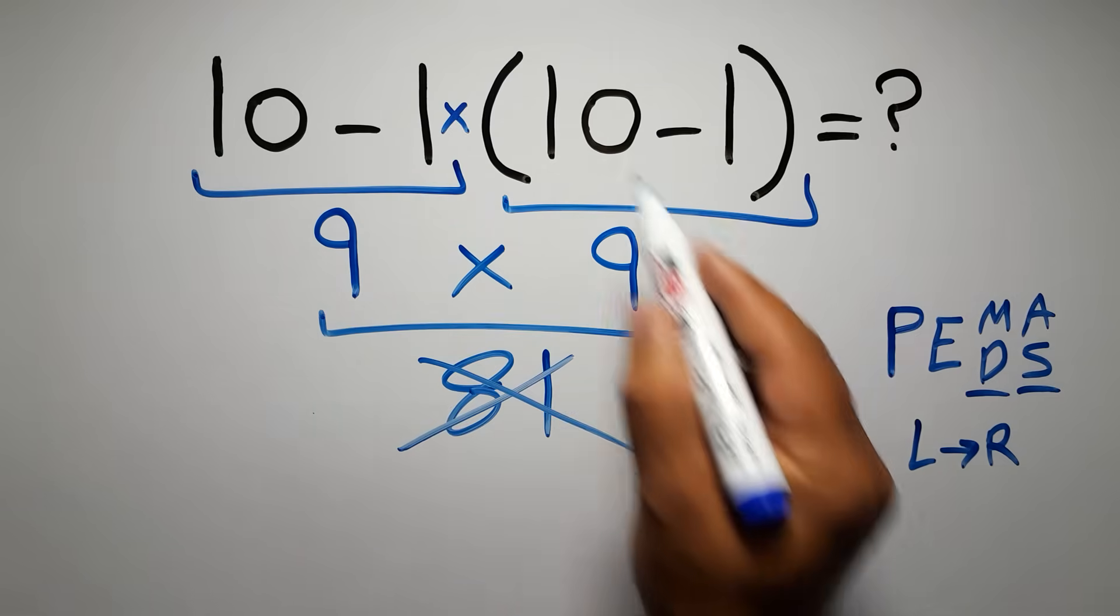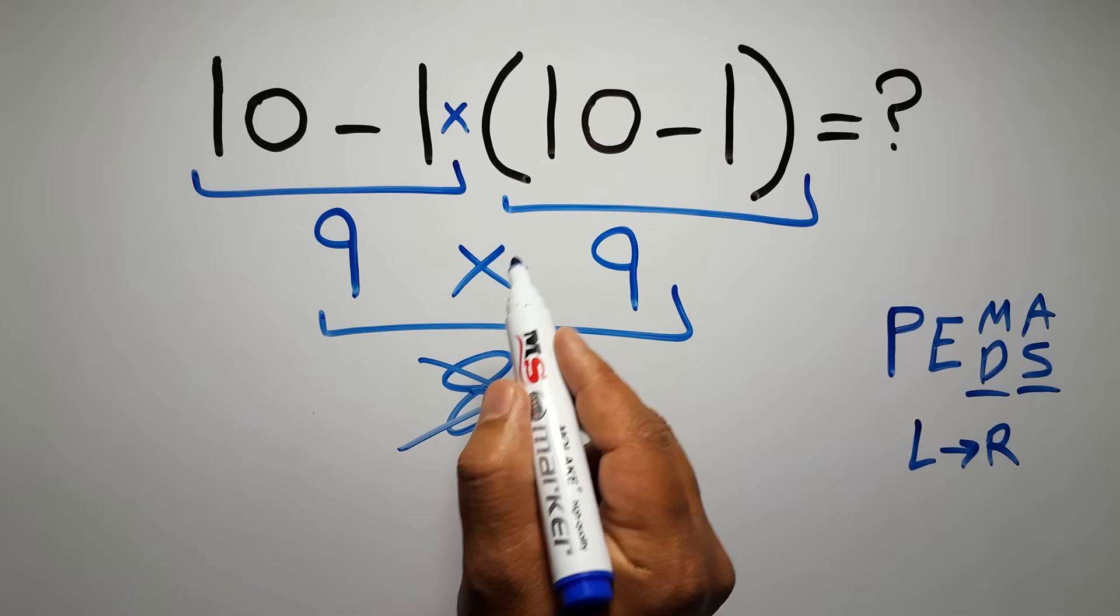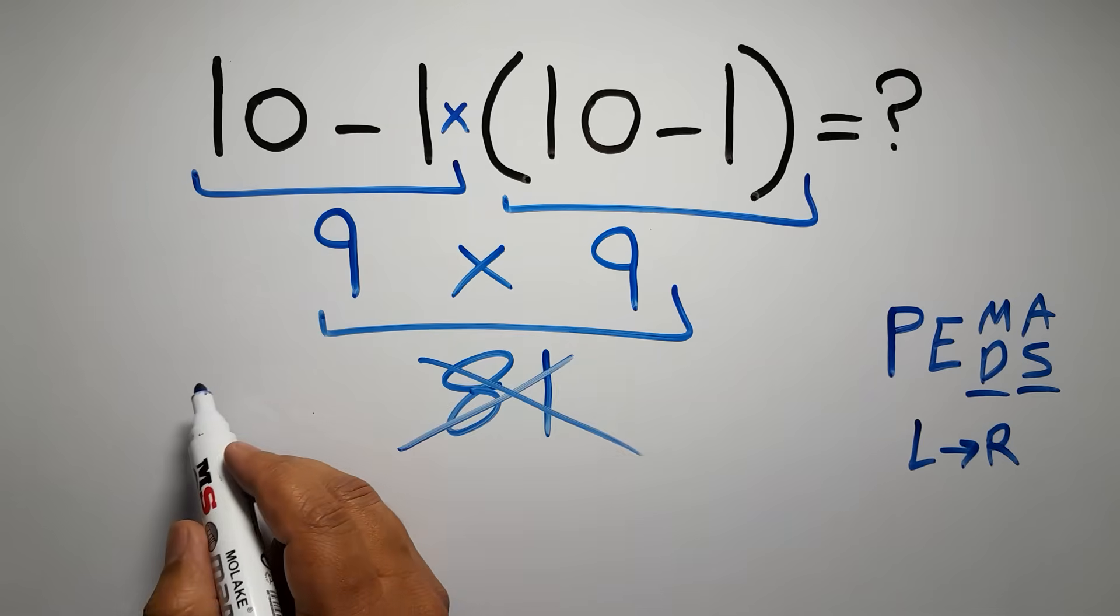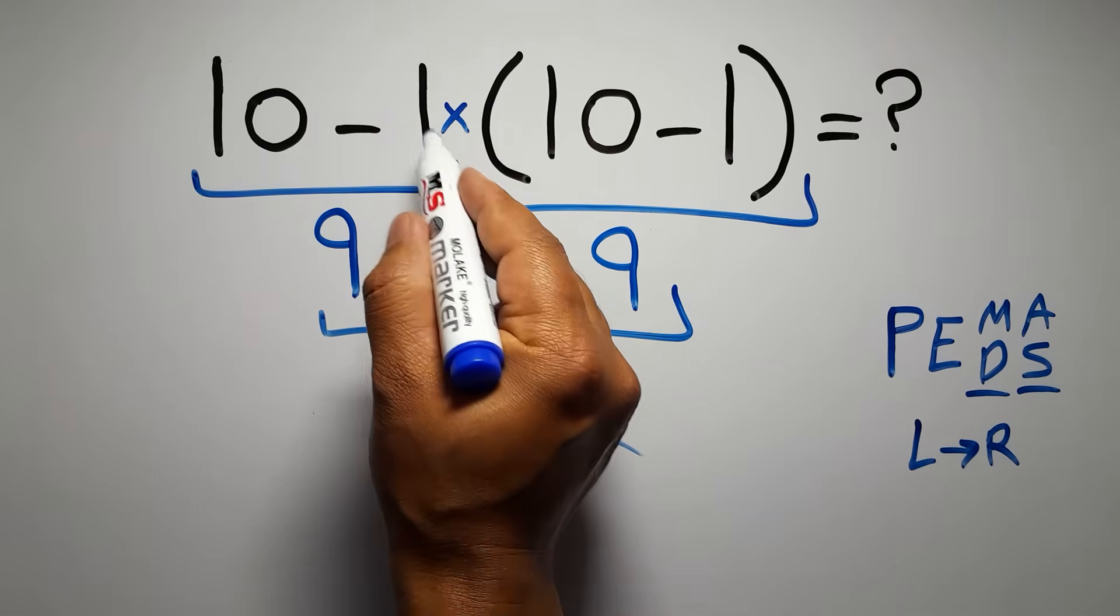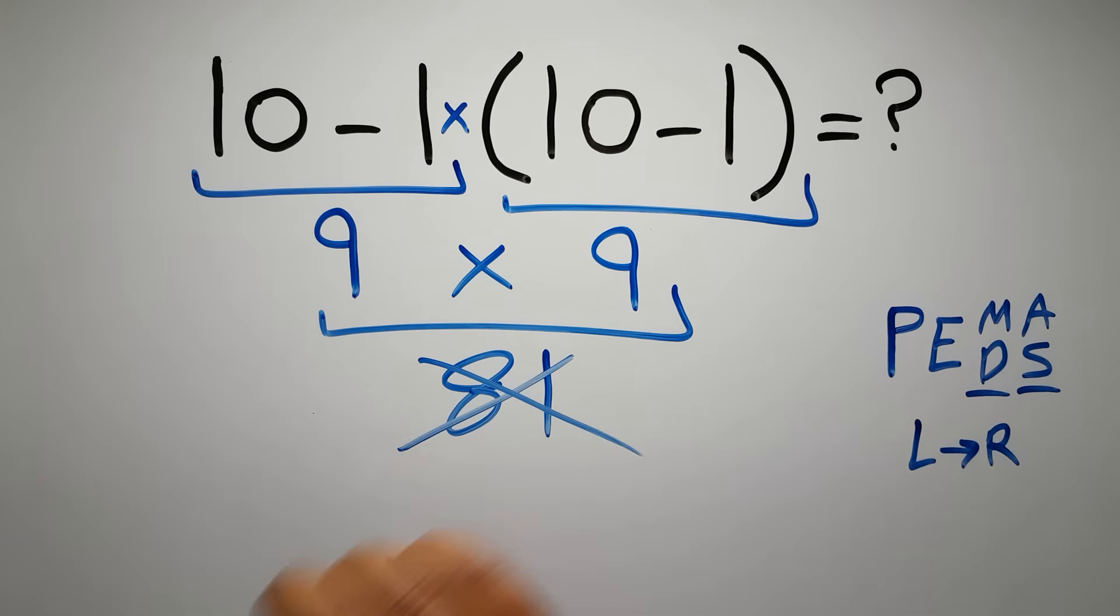So, according to PEMDAS, first we have to do these parentheses, then this multiplication, and finally this subtraction. If we do this subtraction before this multiplication or this parentheses, it is wrong.